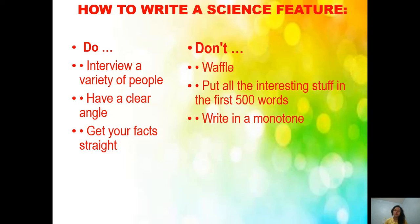So how to write a feature article in science? You are going to interview a variety of people — you need to interview different kinds of people, different groups of people with different cultures, to gain more information about what you are trying to write. Then you are going to have a clear angle — you need to be direct to the point, and get your facts straight. When you say science, it is all about facts. The bases are facts.